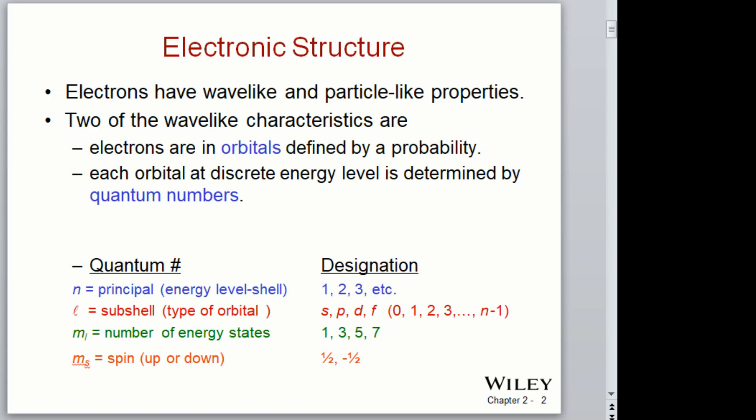The n number, which is the principal quantum number — each electron has a principal quantum number — is originated from the Bohr model and is really related to the distance from the nucleus. Within each principal energy level there is a subshell, and the subshell is the type of orbital for each of the principal quantum numbers.